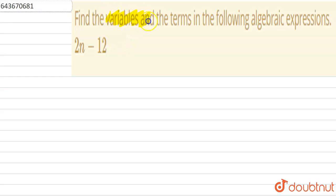Find the variables and the terms in the following algebraic expression. The expression given is 2n minus 12.